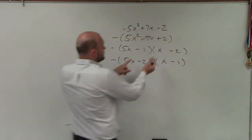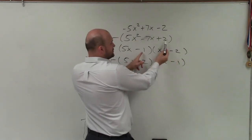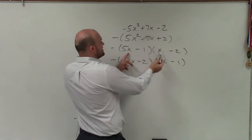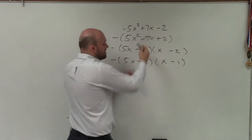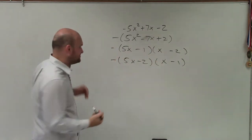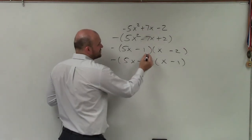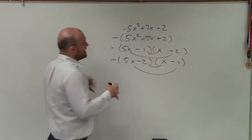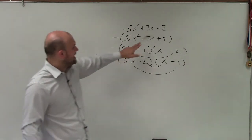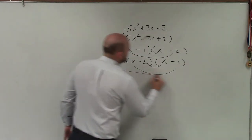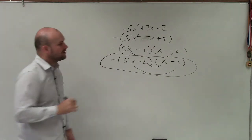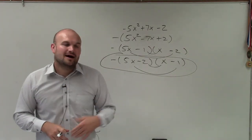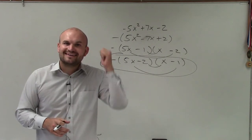Let's double check. Does negative 1 times negative 2 give us positive 2? Yes. Does negative 2 times negative 1 give us positive 2? Yes. And 5x times x gives 5x squared — so it works. Now I just need to find which arrangement gives inner and outer terms that combine to negative 7x. And this one right here works. That is how you factor a trinomial using your head. Thanks.